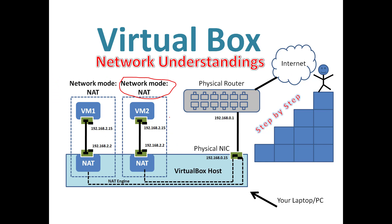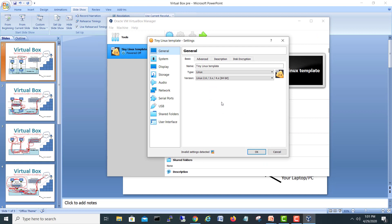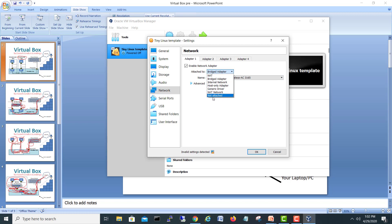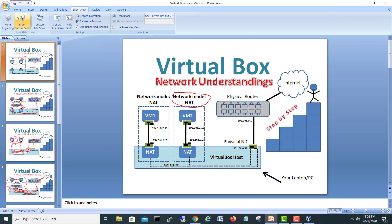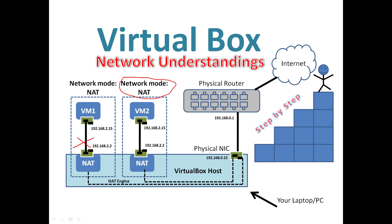There is one more option I didn't mention: Not Attached. Not Attached means the network cable is unplugged — similar to physically pulling the cable from the back of your PC. The VM is isolated and cannot communicate with anything. It is like the cable is disconnected, so the VM has no network connectivity at all.